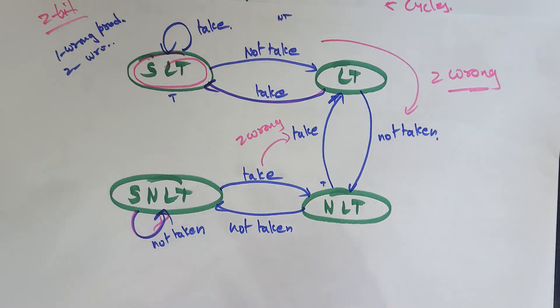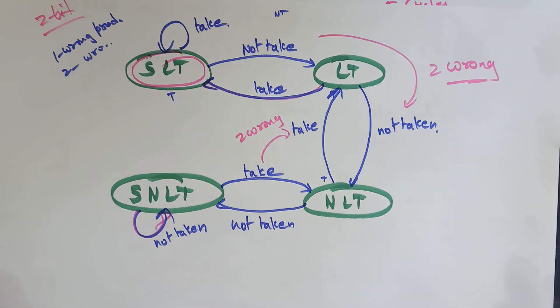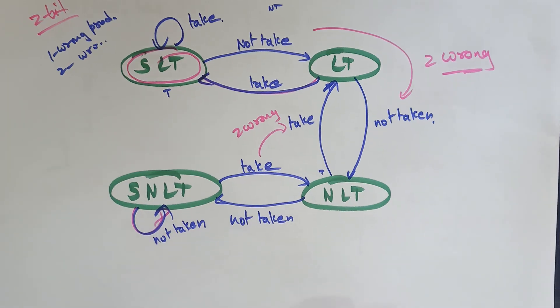I hope you get complete clarity on what exactly this 2-bit dynamic branch prediction is. If you are facing any doubt, please let me know. I will take one more example to explain this topic. Thank you.